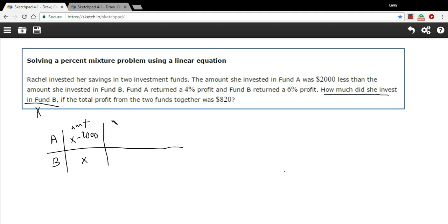There's also a rate here, rate of profit. So Fund A was 4%. We'll convert that to a decimal, so 0.04. And Fund B was 6%, so 0.06. And then the actual profit itself. And here they're giving us the total profit. So I'm going to add a third row down here. We'll call this total. And the total profit of the two funds together was $820.